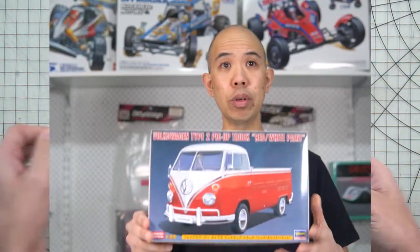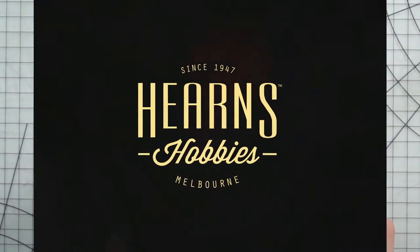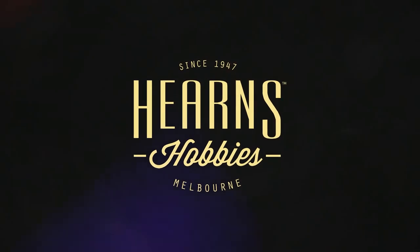That is the Hasegawa 1-24 scale Type 2 Combi. Hello, this is BJ from Hern's Hobbies and welcome again.